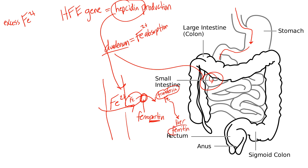To keep the three terms straight: ferroportin is the port of entry for iron; transferrin even has the word 'transfer' in it; and ferritin is the third one you can identify by process of elimination once you know the other two.